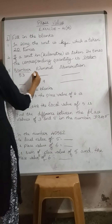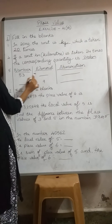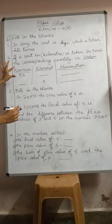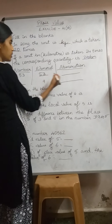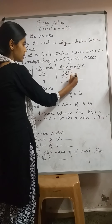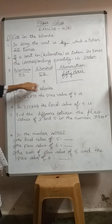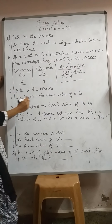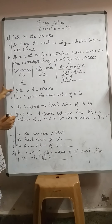Next we have number, numeral, and numeration. The numeral is the number which is taken. Numeration is writing in words — so for 53, the numeral is 53 and the numeration is fifty-three written in words. Next, the numeral given is 9: the number is 9 and numeration is nine. If you have followed this, you can do the next one.